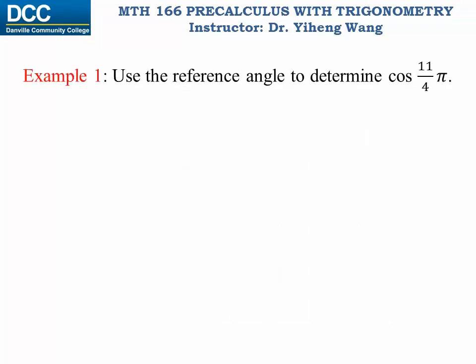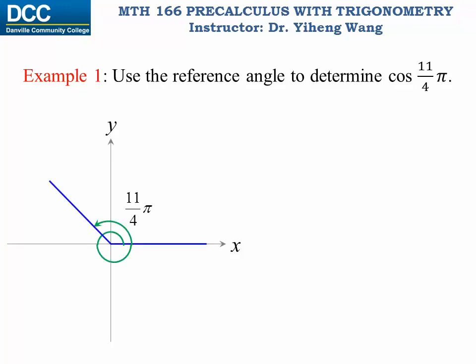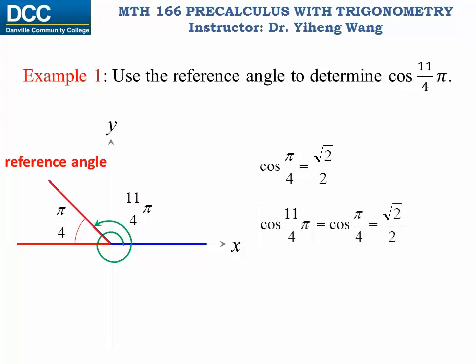Let's look at this example. We need to use the reference angle to determine cosine(11π/4). The first thing to do is to sketch this angle. It is a positive angle and it is more than one revolution, so we sketch it in its standard position. Its reference angle is the acute angle made by its terminal side and the horizontal axis. We can tell that this reference angle is π/4, which is one of the special angles we just memorized. Therefore cosine(π/4) is √2/2, which means the absolute value of cosine(11π/4) is also √2/2.